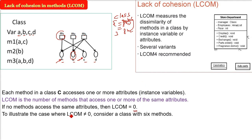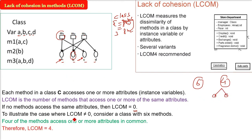In order to illustrate the case where LCOM is not equal to 0, consider 6 methods. Four of the methods access one or more attributes in common. So what do we say? We say LCOM is equal to 4. The lack of cohesion in methods is 4.